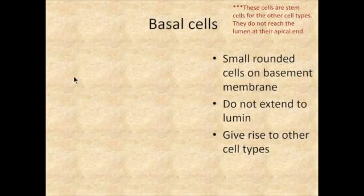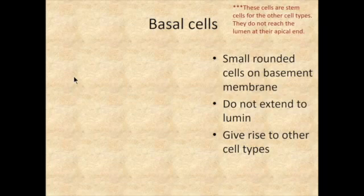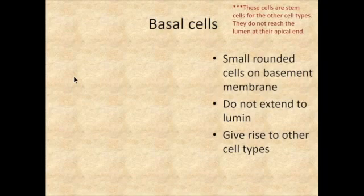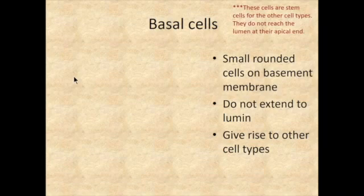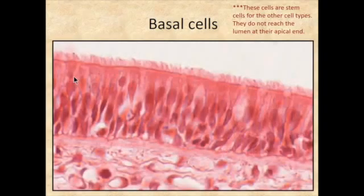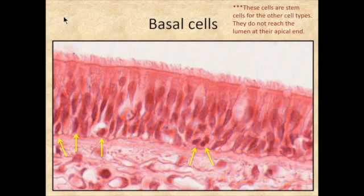Now there are basal cells. Basal cells are small, spherical-shaped cells that lie adjacent to the basement membrane, and they are going to be the stem cells for all of the cell types in the epithelial sheet. This is a very common pattern we're going to see throughout several systems that have stratified or pseudostratified epithelium. In this picture, I pointed out several basal cells so you can see where they're located — the nuclei are going to be the most basal.